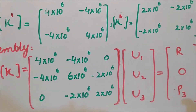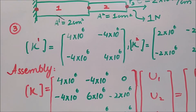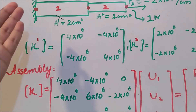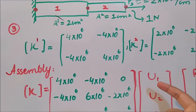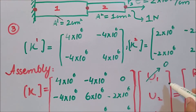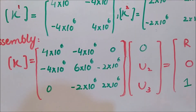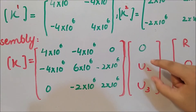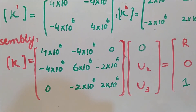In the next step we apply boundary conditions. Since the bar is fixed at node 1, u1 = 0. With u1 = 0, we have a system of three equations with three unknowns: u2, u3, and the reaction R. This system has a unique solution, allowing us to solve for the nodal displacements and the reaction force.